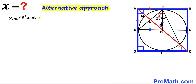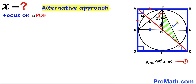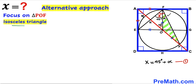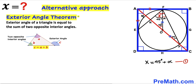Looking at triangle POF, it is an isosceles triangle since OF equals OP — both are radii. So if one base angle is alpha, the other is also alpha. Now recall the exterior angle theorem: the exterior angle of a triangle equals the sum of the two opposite interior angles.